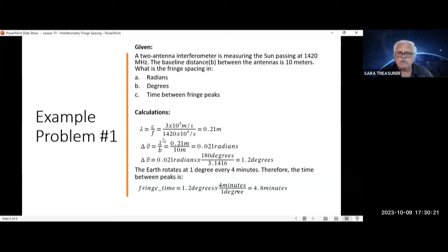Fringe spacing in radians equals lambda over B. 0.21 over 10 gives you 0.021 radians. Converting that to degrees, you take that answer times 180 degrees over pi, 3.1416. That'll give you 1.2 degrees. As we said during drift scans, the earth is rotating at 1 degree every 4 minutes. Therefore, to convert the 1.2 degrees to minutes, you take that times 4 minutes over 1 degree, which equals 4.8 minutes.